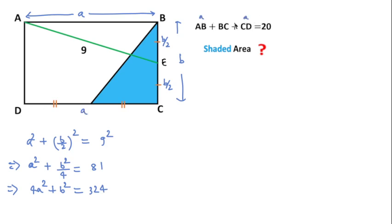AB is A and CD is A and BC is B, so we can write 2A + B = 20. If we square both sides, then we can write 4A² + B² + 4AB = 400.